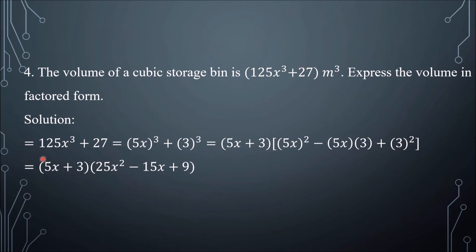All you need to do is factor this. 125x cubed plus 27 is a sum of two cubes: the first cube is (5x) cubed and the second cube is 3 cubed, which is 27. Following general form number 1, we have 5x plus 3 times 5x squared minus 5x times 3 plus 3 squared. Simplifying, we have (5x plus 3)(25x squared minus 15x plus 9), and that is the factored form of the volume.